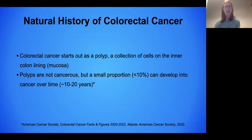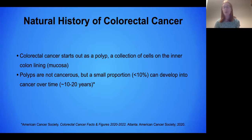The natural history of colorectal cancer: colorectal cancer starts out as a polyp, which is just a collection of cells on the colon lining or mucosa. Polyps themselves are not cancerous — they're benign — but a small proportion, less than 10%, can develop into cancer over time, and that is on the order of 10 to 20 years typically.